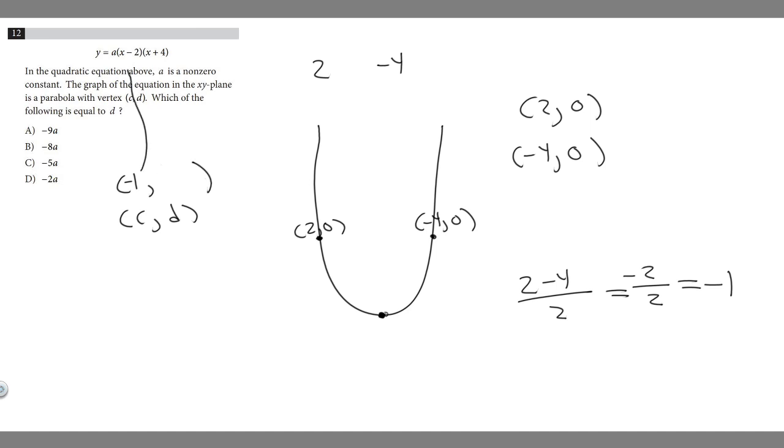So it's just going to be when x equals -1 in this formula. y = a(x-2)(x+4). Let's plug in -1. So y = a(-1-2)(-1+4).